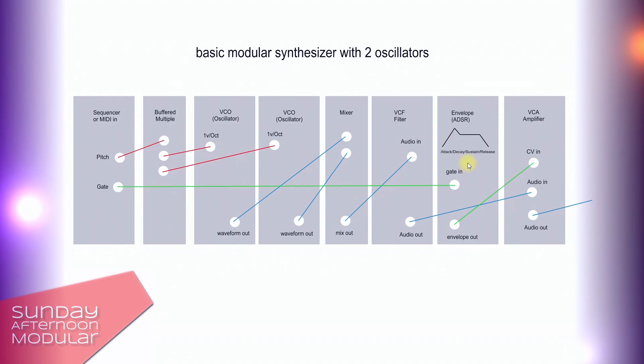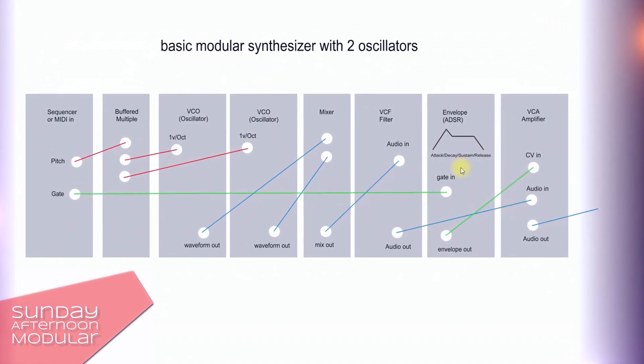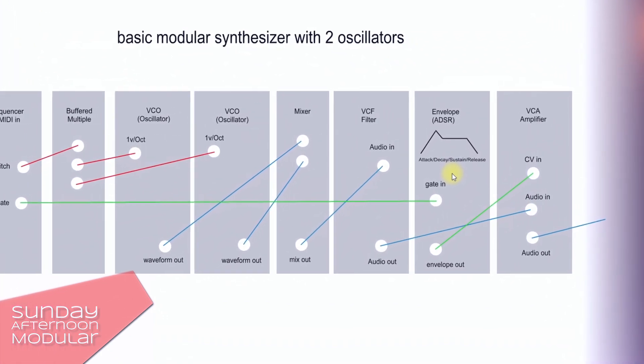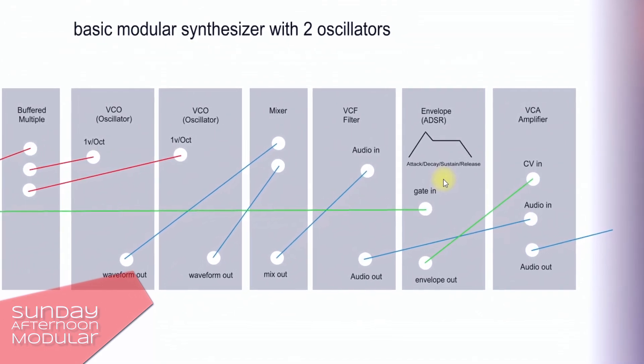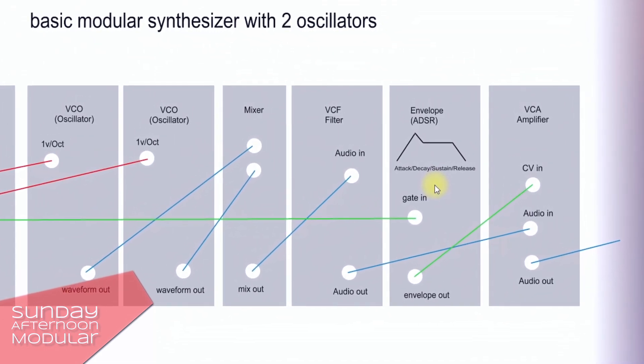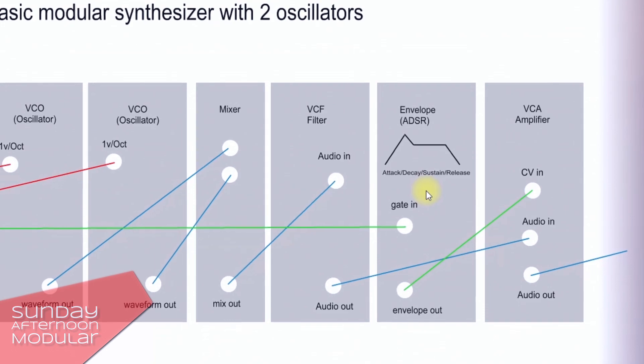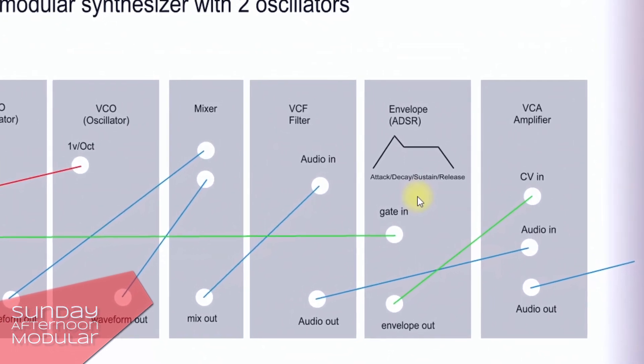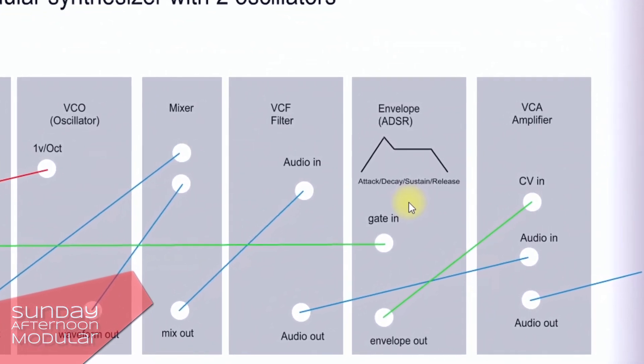Depending on what we set on the envelope the gate will have a rather hard or soft attack, which tells if the gate opens fast or slow. Short or long decay. So how much time it needs to sink from the maximum voltage level to the level of sustain.